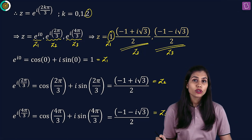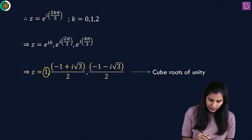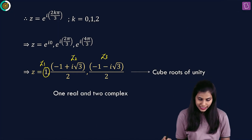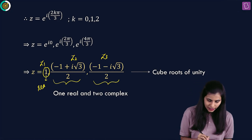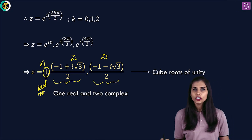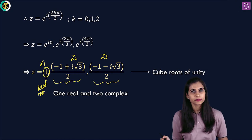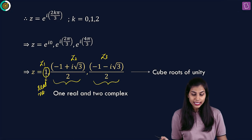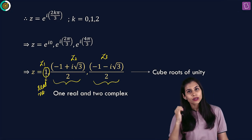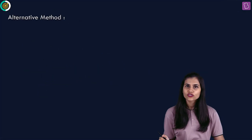The three cube roots of unity are z1, z2, and z3. You can clearly see that 2 are complex numbers and 1 is a real number. So when you have cube roots of unity, one is real and the other two are complex. This is how, using De Moivre's theorem, you can compute the cube roots of unity. I also have an alternate approach using the concept of quadratic equations — let's check that out.